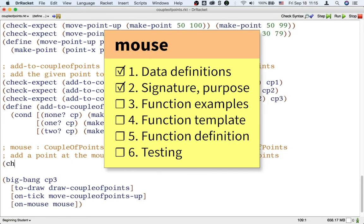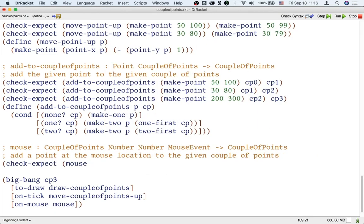Okay, so let's write some examples for this function, as usual. If the mouse is used where the current world is CP0, but the mouse moves, let's say, to 50 100, remember that mouse event is an enumeration, and one of the possibilities of a mouse event is move. So, the mouse is just moving there, 50 100. Well, then, we should add a point there. So, that's CP1.